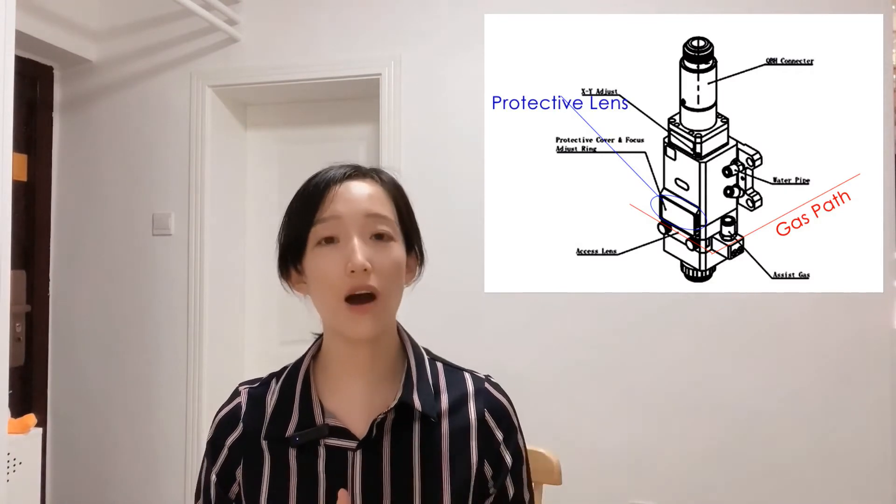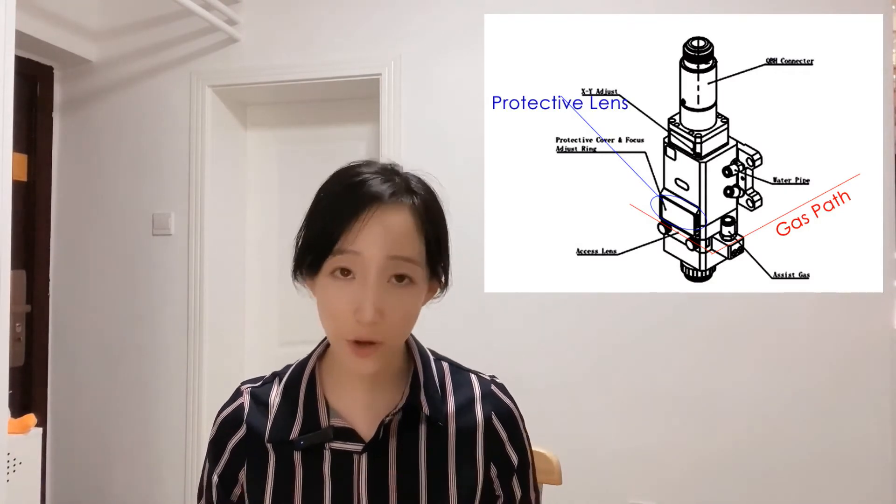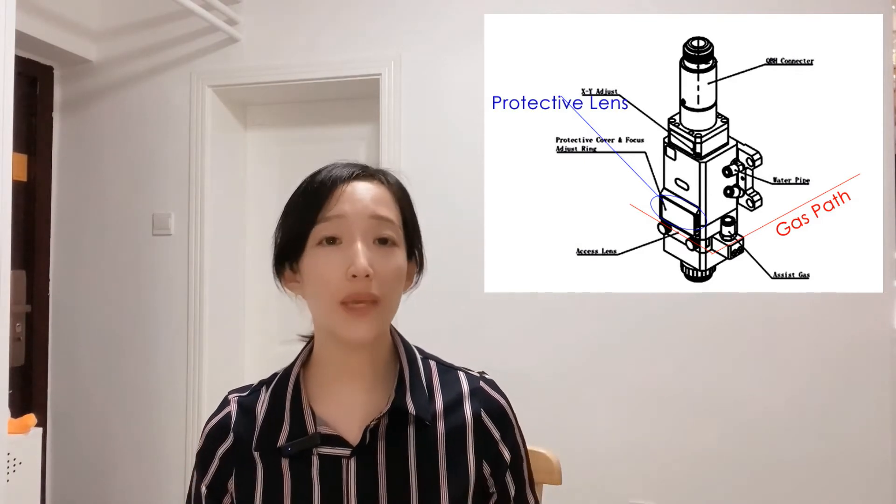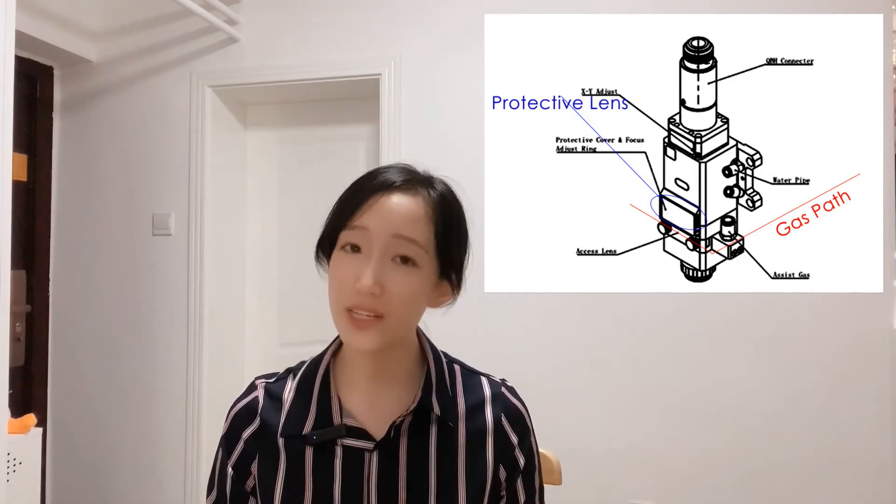Therefore, we should try to reduce the temperature difference as much as possible, especially in summer. Since there are protective lenses on the top and bottom of the collimating lenses and focus lenses, their damage will be closely related to the protective lenses. The second cause is that after the protective lens is burned through, if it's not found in time, you continue to emit laser for processing...